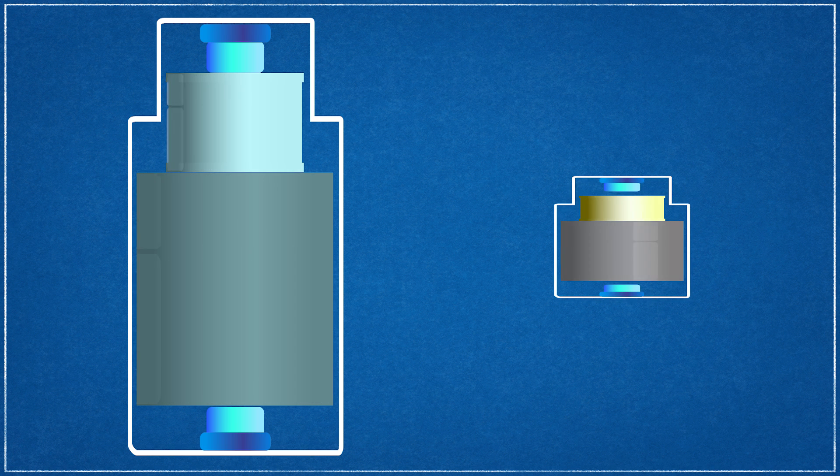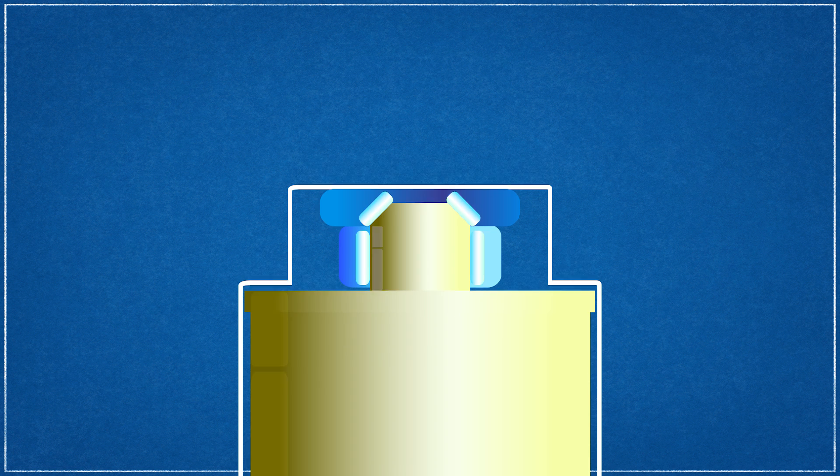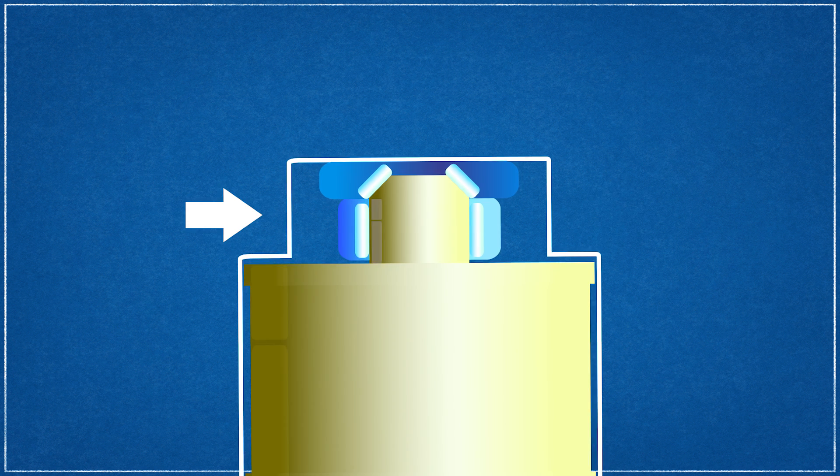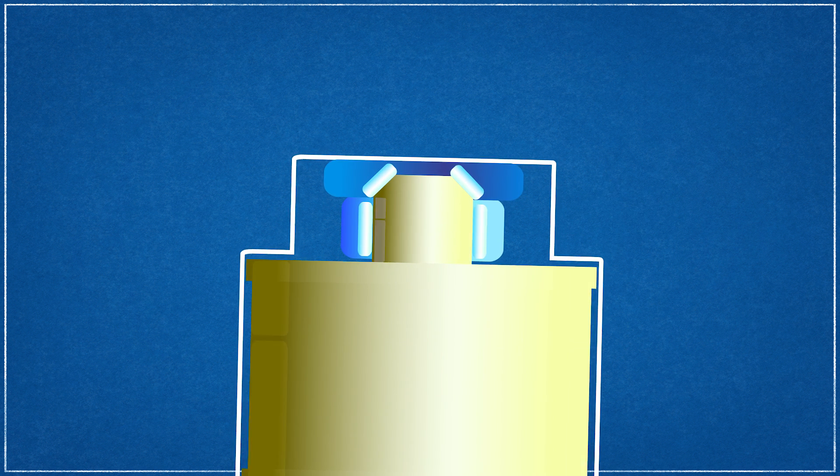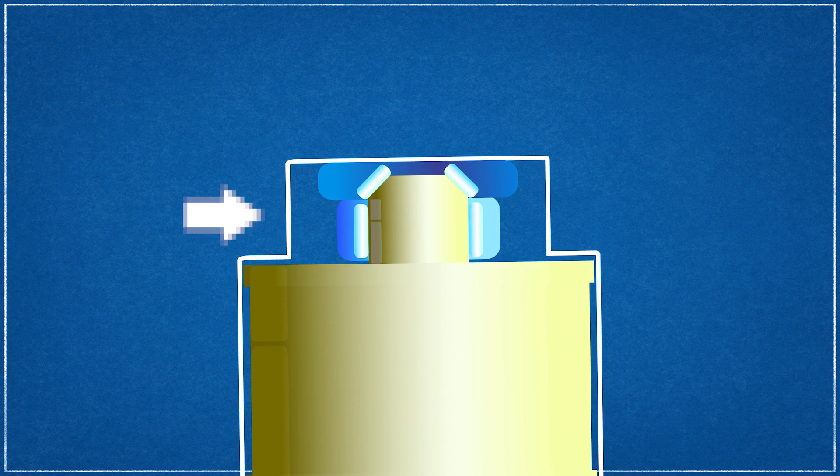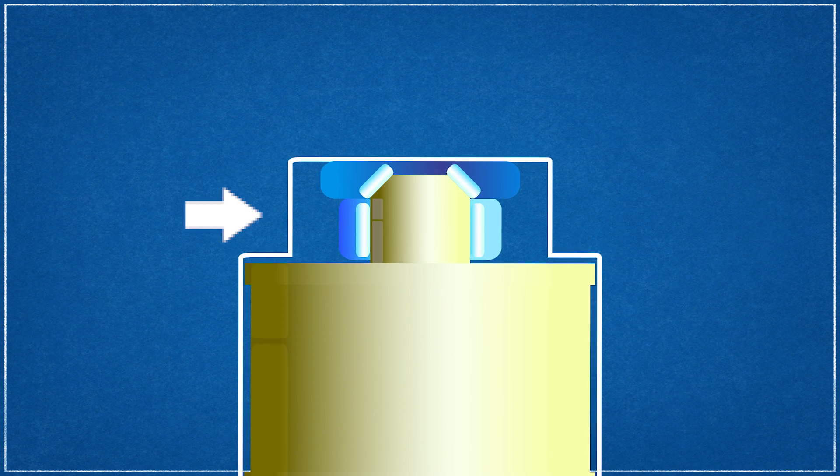Because flywheel energy storage systems usually enclose the flywheel within a vacuum to reduce friction, the primary point of energy loss happens at the bearings that support the flywheel. Not only must the bearings support the flywheel, but also resist the forces resulting from its changing orientation, especially the persistent rotation of the earth. These changes are resisted by the gyroscopic forces exerted by the flywheel's angular momentum, which exerts a force against the bearing system.